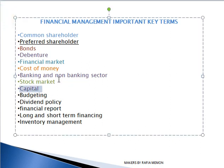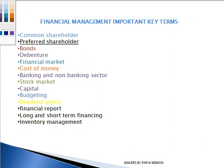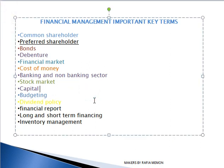Capital is your own assets — your own machinery and resources. Budgeting means making future estimates: thinking about the future, setting a budget, and estimating what will happen. Dividend policy is a set of guidelines that the company uses to decide how much earnings will be given to investors.